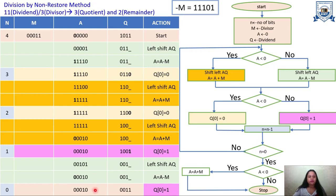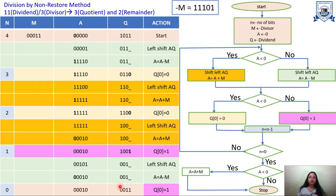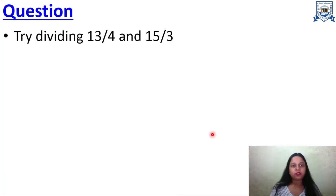We check once more: A is not less than zero (MSB = 0), so we stop. Reading the registers: the A register holds the remainder, which is 2, and the Q register holds 0011, which is the quotient 3. We have successfully found both the quotient and remainder using the non-restoring division method. You can solve any such question by following this flowchart.